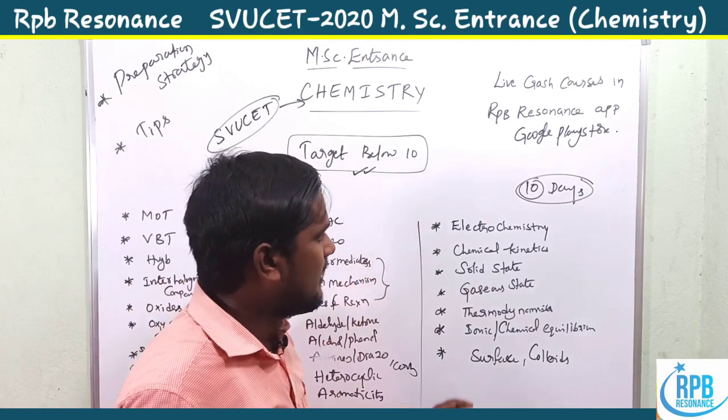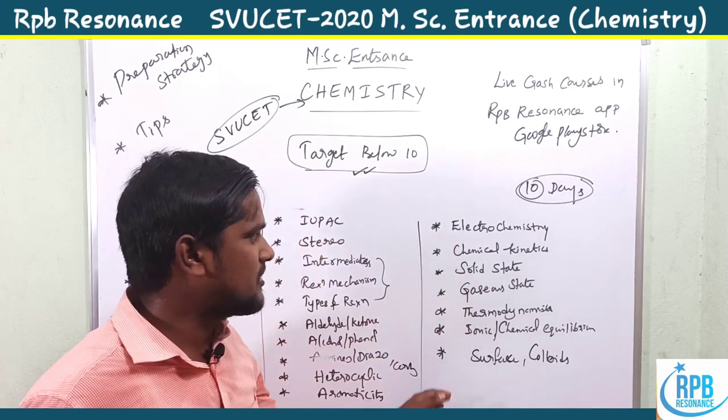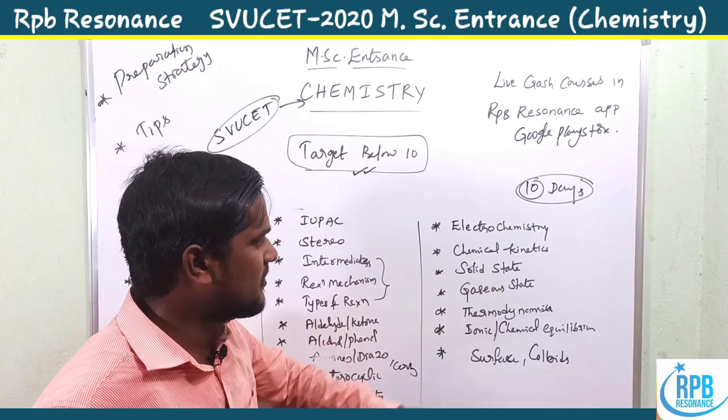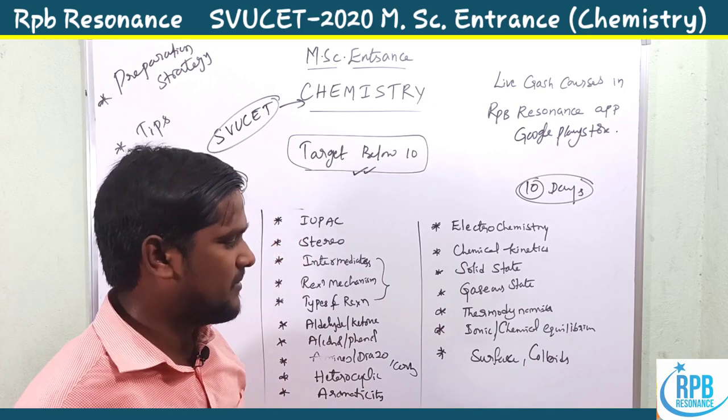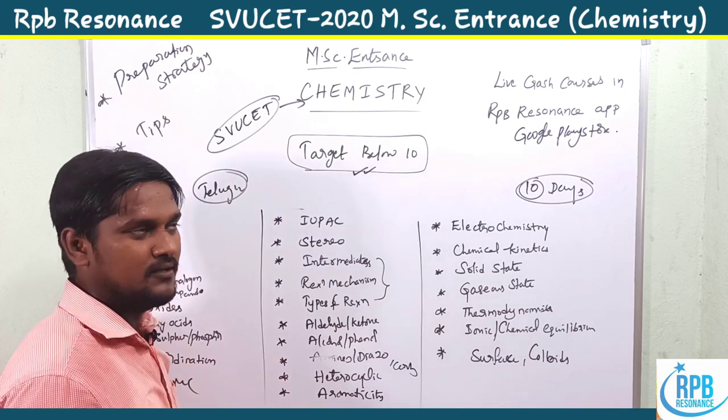Here are the physical chemistry topics: electrochemistry, chemical kinetics, solid state, gaseous state, thermodynamics, ionic equilibrium, and surface chemistry.